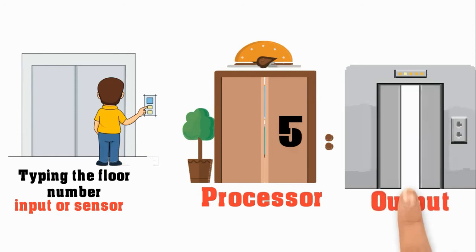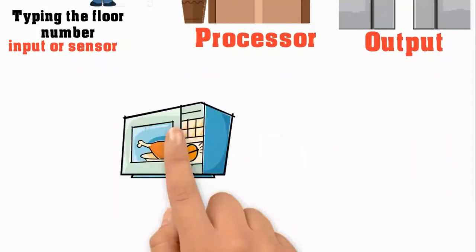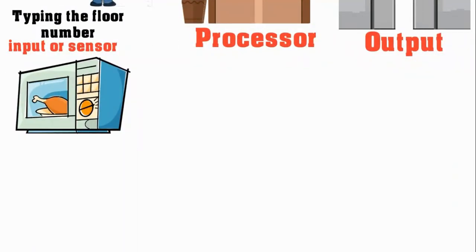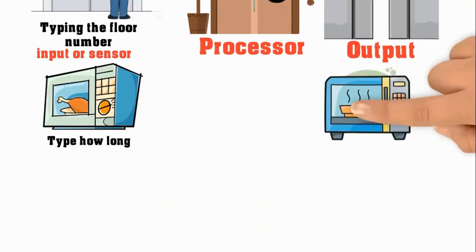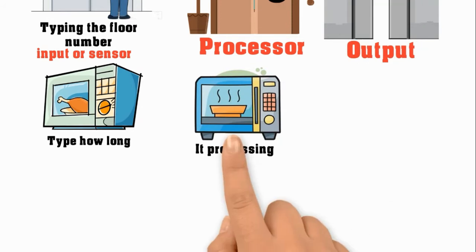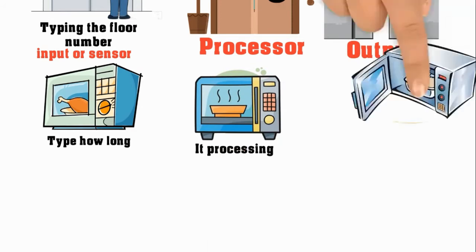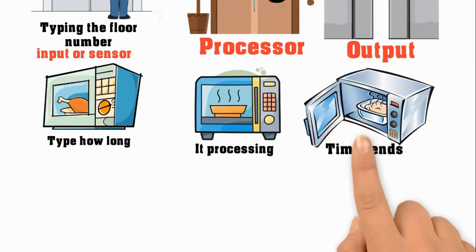Another way you can explain it: placing your food in a microwave and typing how long you are going to heat it is the input. Processing while it is working is the processor. And the output is when the timer ends and your food is cooked.